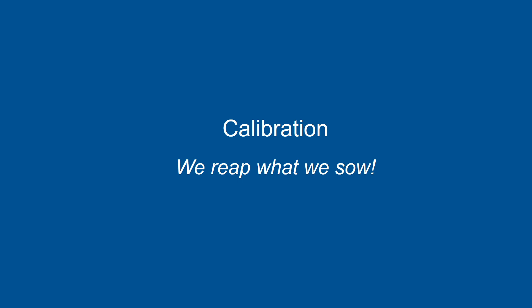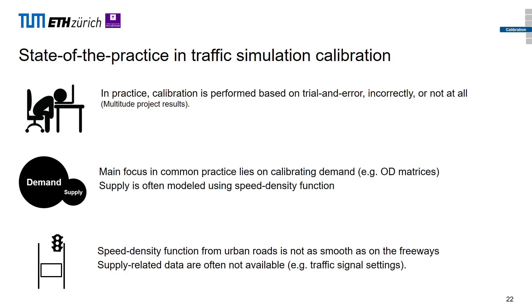Now about calibration. There's a quote: we reap what we sow — the more effort put into calibration, the better the results. Unfortunately, this is not what happens in practice. Results from the Horizon 2020 project called Multitude show that calibration in practice is based on trial and error: people manually change some parameters, look at the GUI to see if expected congestion appears in the right places, or simply use default parameters — effectively doing no calibration at all.